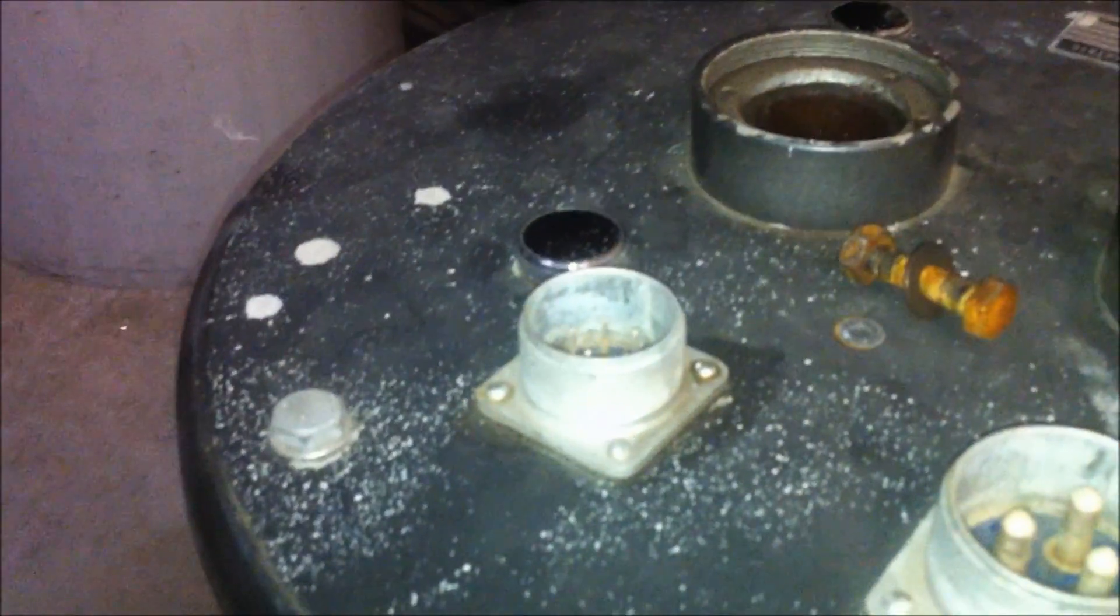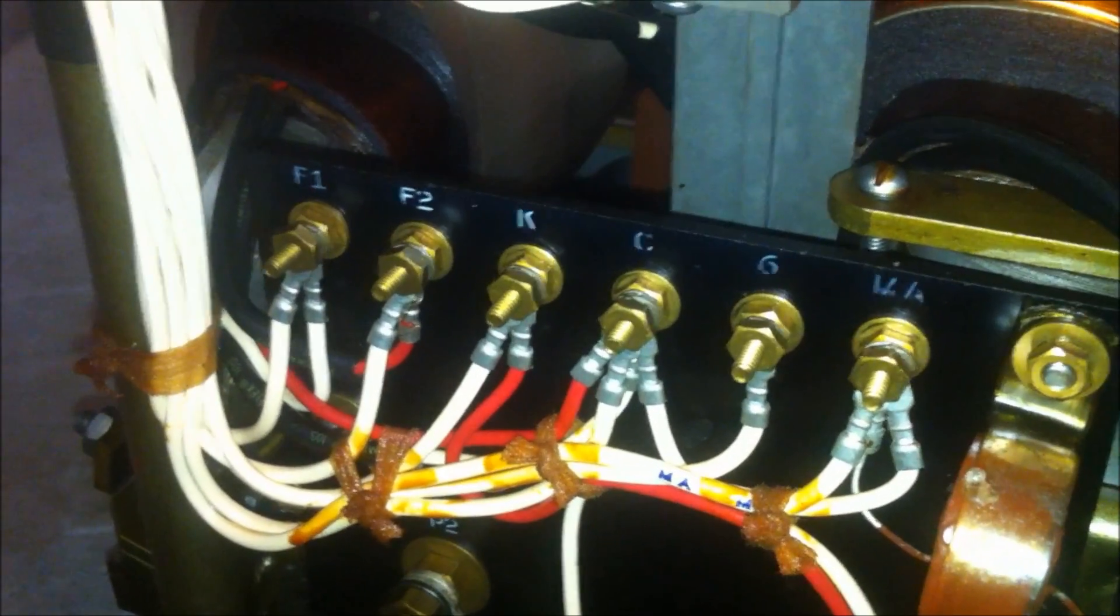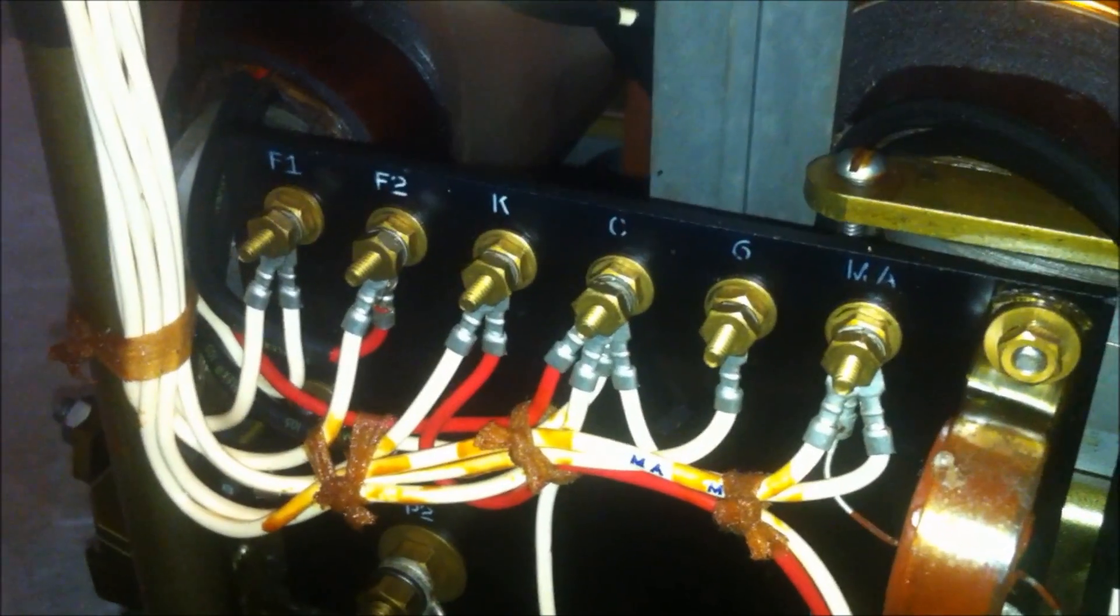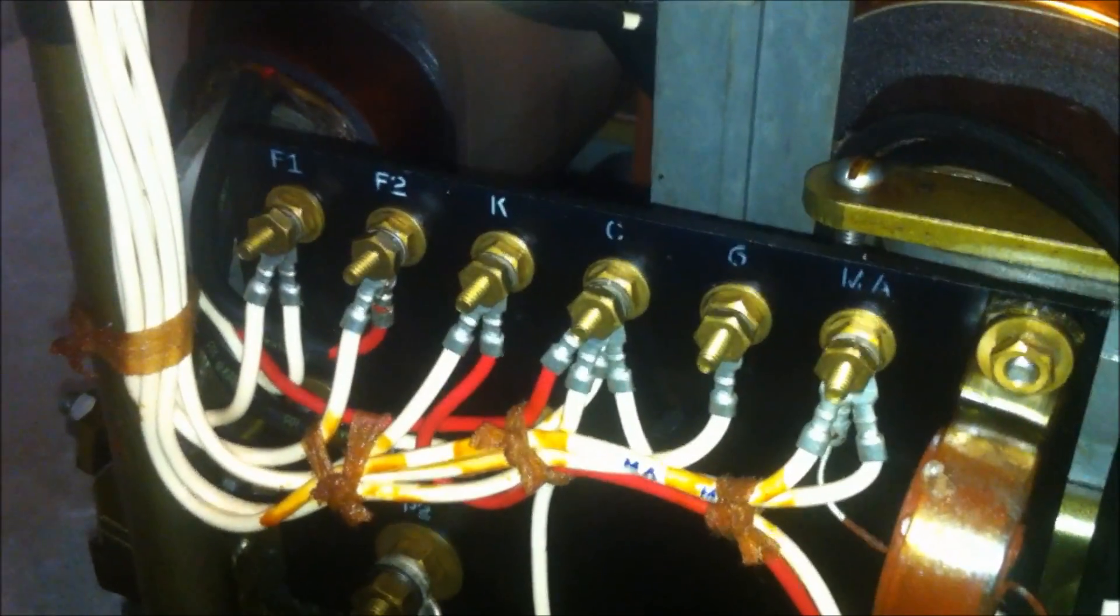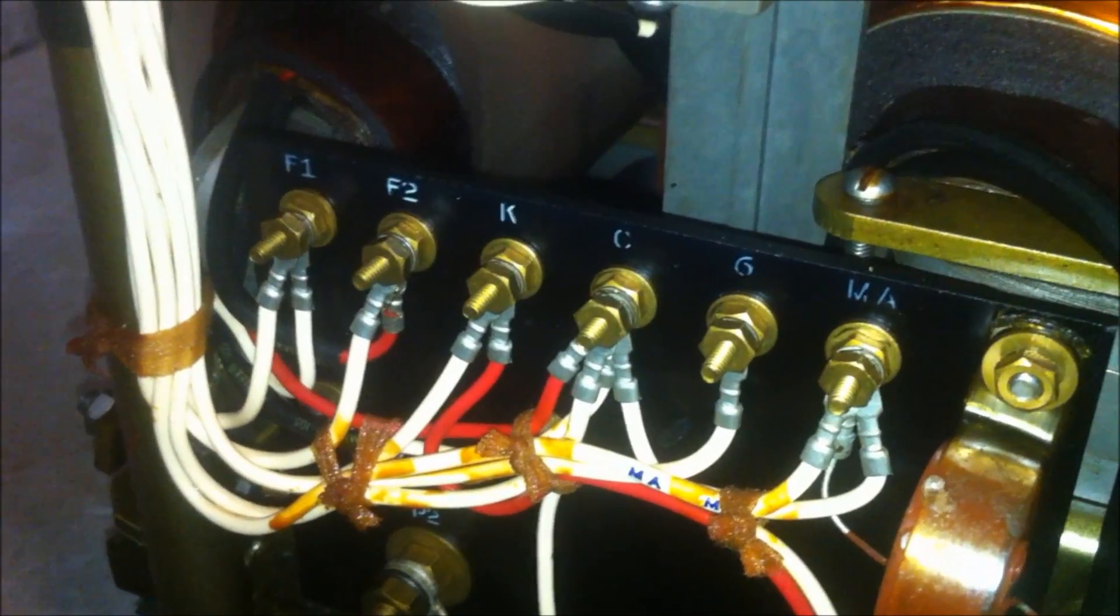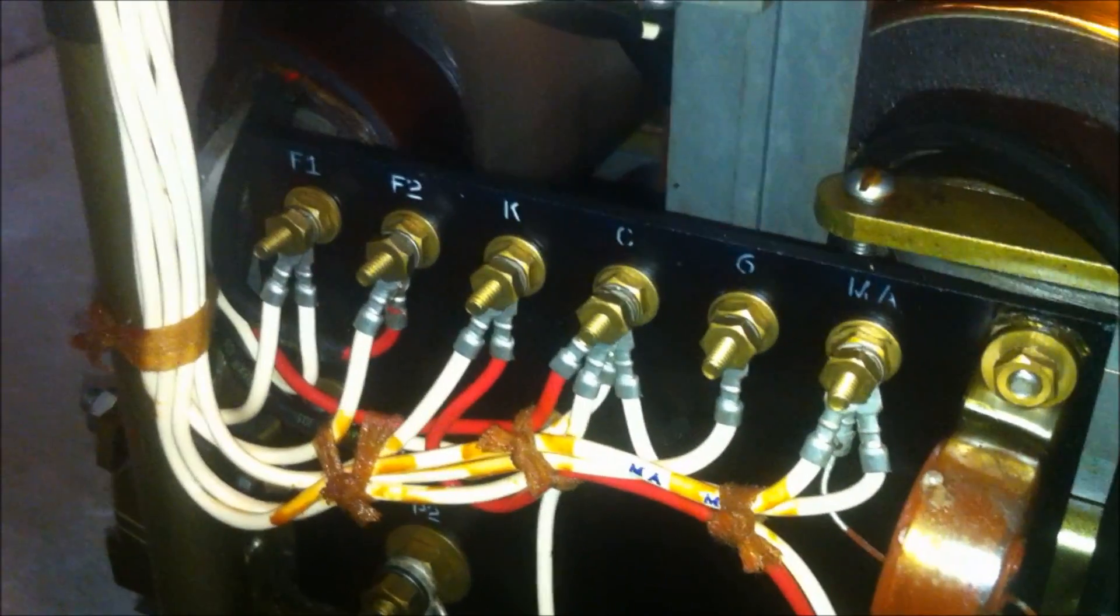You can see that all of them are labeled. We've got F1, F2, K, C6, and MA. I've already tracked a few of those back so I'm pretty confident that they're all for measurement purposes.